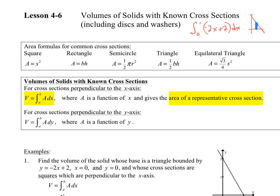When we've dealt with area before, we had the definite integral, and this would represent the height of our rectangles. This would be the width — delta x — so it's base times height. This is an area formula. The integral symbol looks like an S, because that is an S, representing the great summing machine. It adds up an infinite number of these rectangles as delta x goes to 0. So this is height times width — two dimensions.